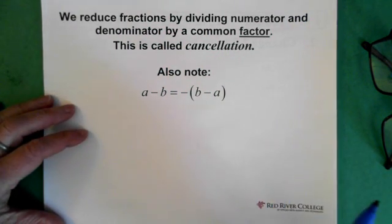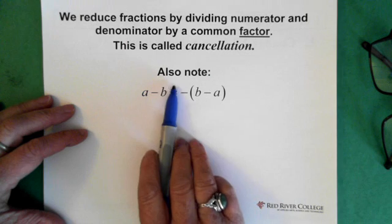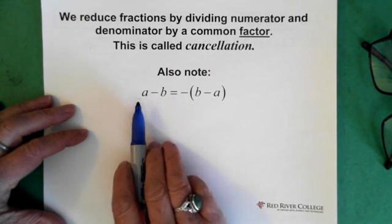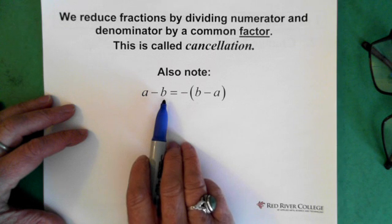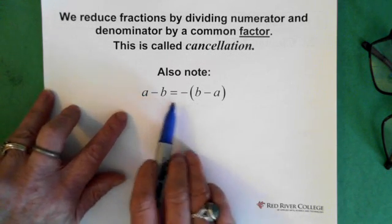Now when we're doing that, we're doing a process that's called cancellation. Another thing to pay attention to is this: when we have a number minus another number, we can actually change that.